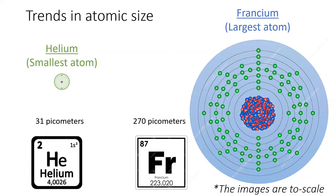This slide shows scale models of the smallest and the largest atom. Francium is about nine times larger than helium. It's no coincidence that these two atoms are on opposite corners of the periodic table.